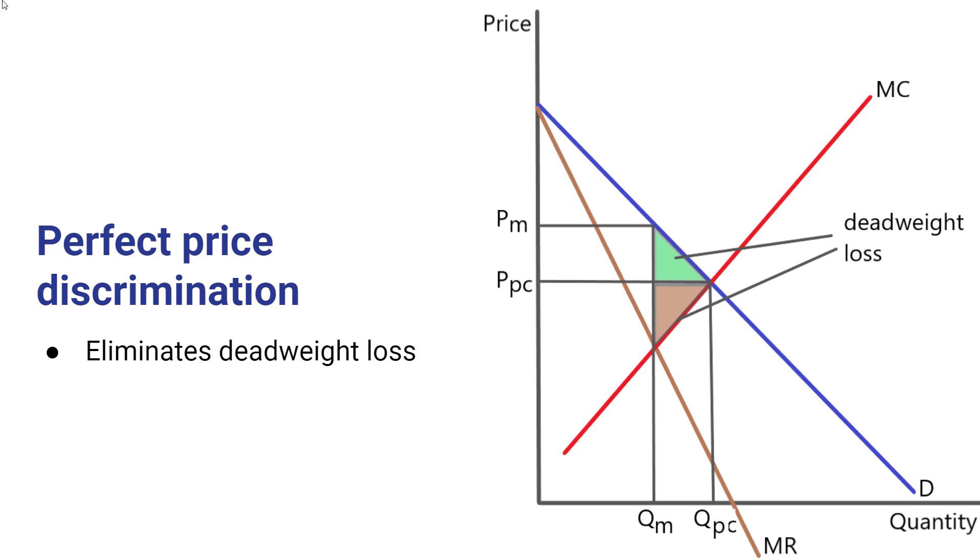If a firm can engage in perfect price discrimination, deadweight loss is eliminated. However, if you think carefully about it, that only occurs because it's eliminating all of the consumer surplus. Every penny of consumer surplus is converted into producer surplus because each customer would be paying the maximum price they're willing to pay. And that would represent additional revenue and additional profit for firms.